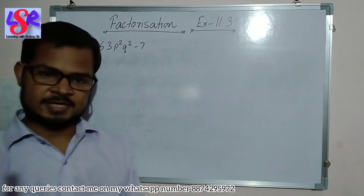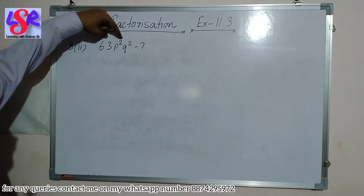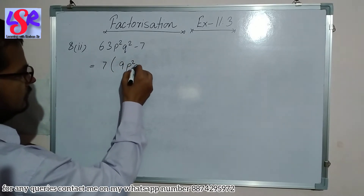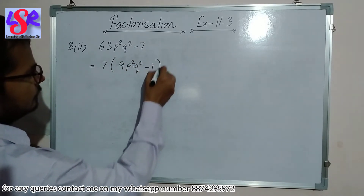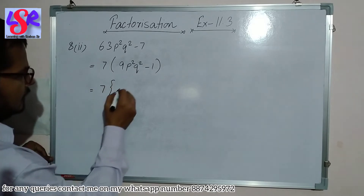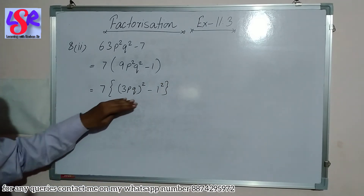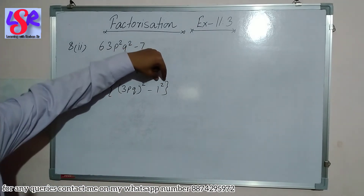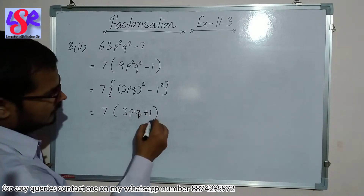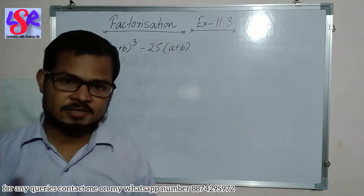Now question 8 second part: 63p²q²-7. We take 7 as common, giving 7(9p²q²-1). This is written as 7[(3pq)²-1²]. Using a²-b²=(a+b)(a-b), this becomes 7(3pq+1)(3pq-1) as the answer.